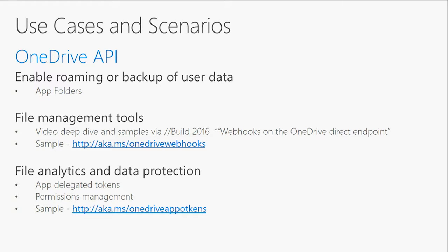Some scenarios you can enable with the OneDrive API include enabling roaming or backup of user data. This is when your app needs a location in a user's OneDrive to store data — enabling roaming or the ability to store settings. The OneDrive API now supports app folders in OneDrive Consumer and OneDrive for Business.